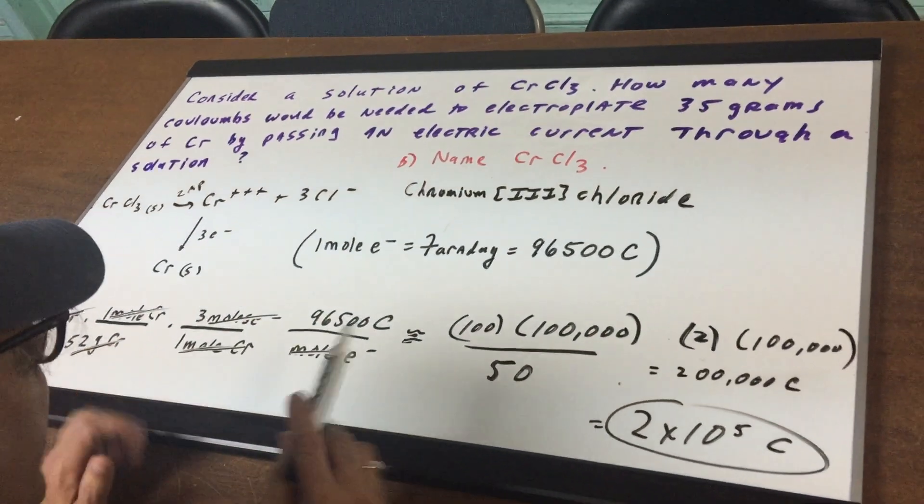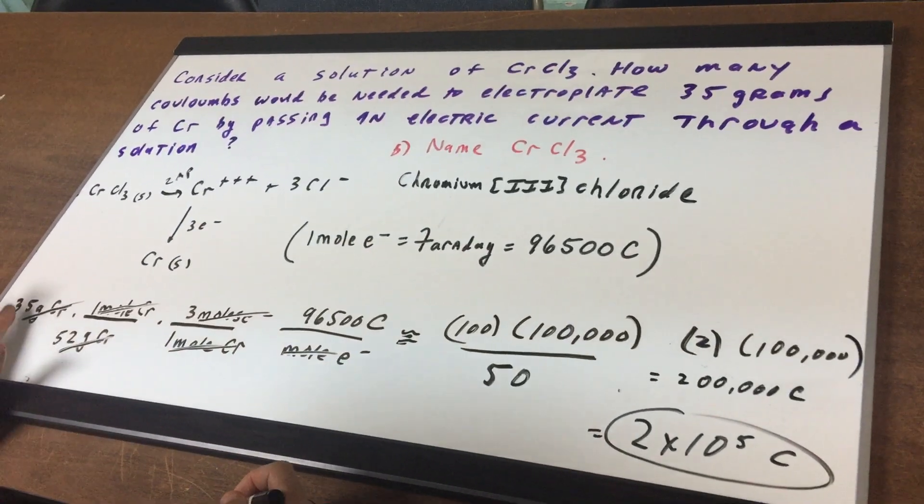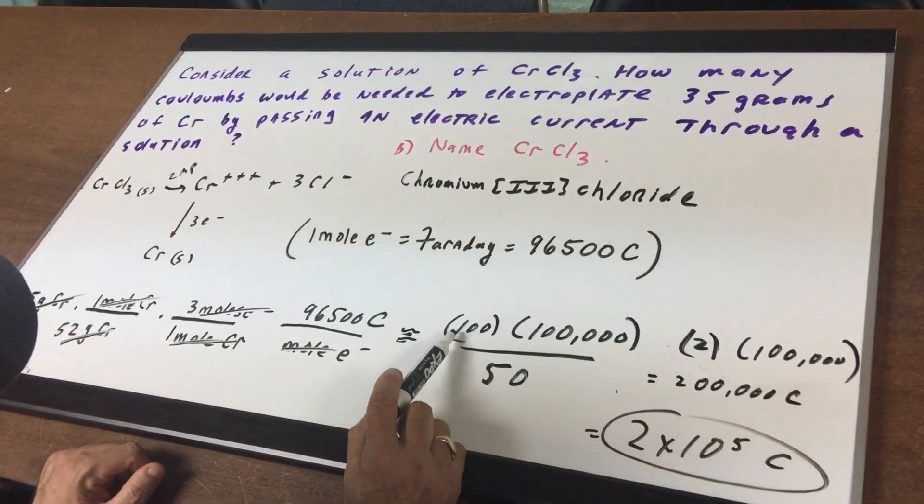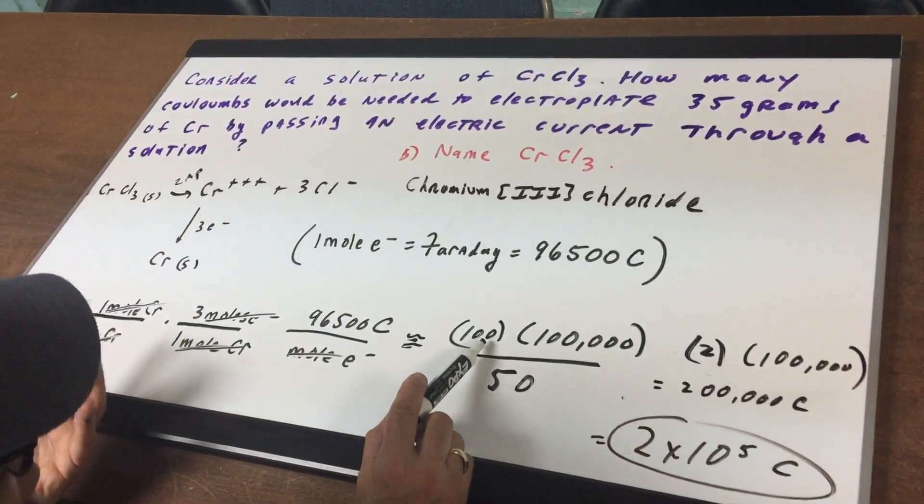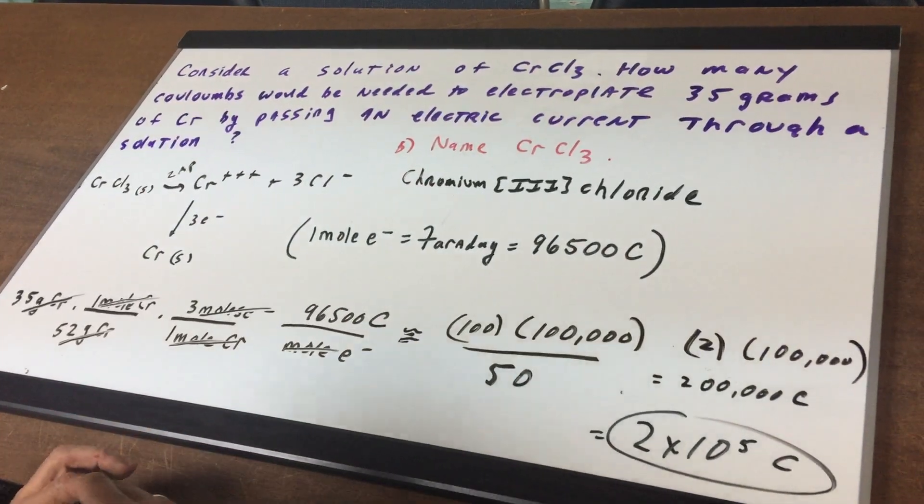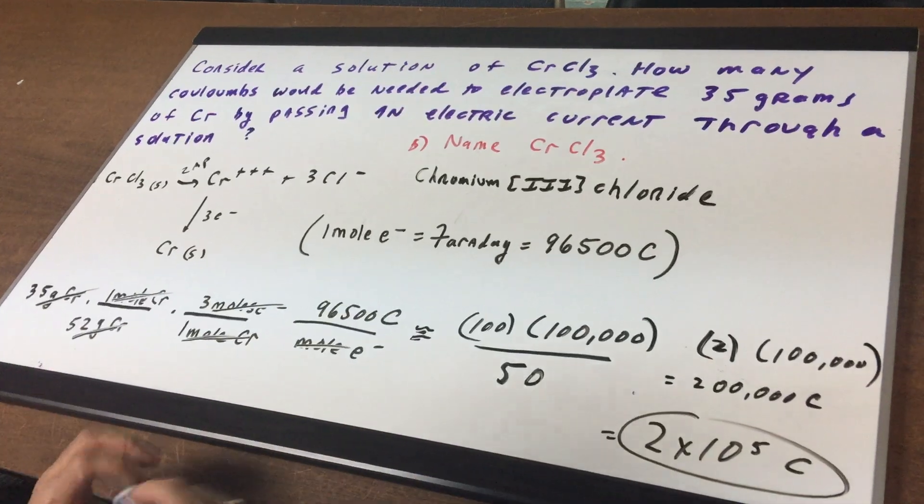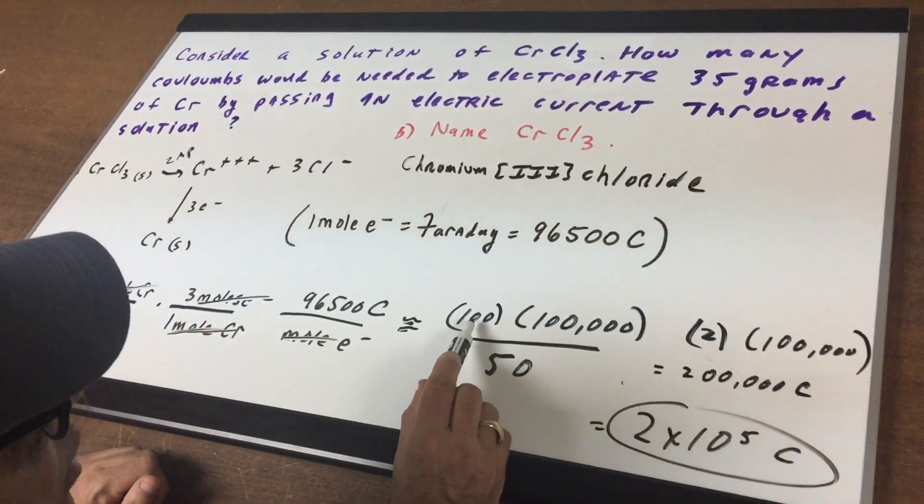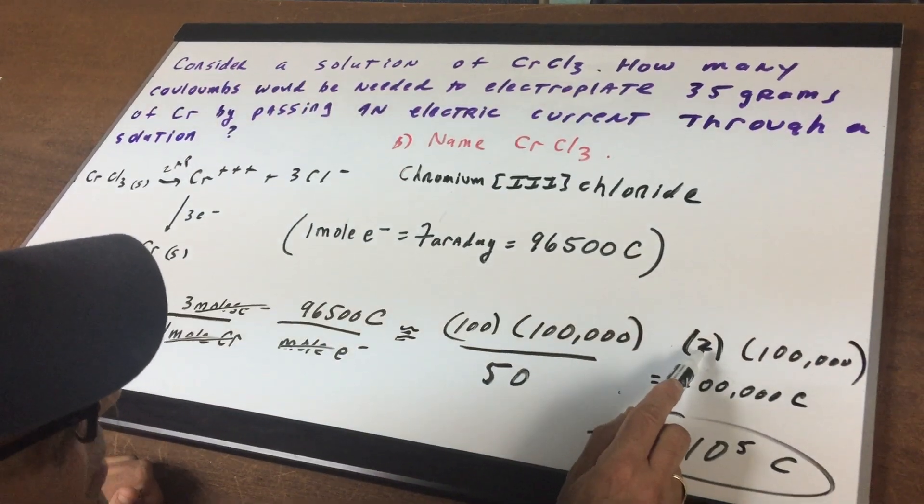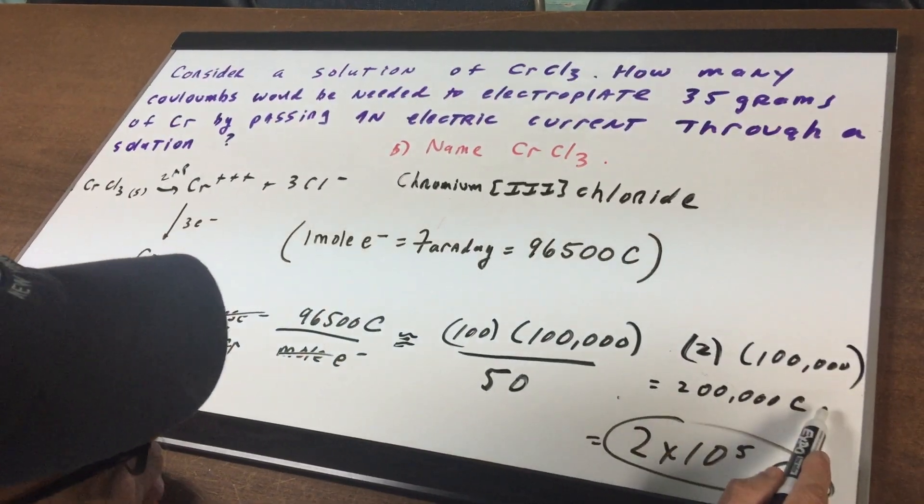Now, to hit this on the DAT at lightning speed, watch what I do. 35 times 3 is a little more than 100, so I'm going to equate this to approximately 100. 96,500, call it 100,000. 52, call it 50. So I reduce this now into something that's very easy. Now 100 over 50 is 2, so it becomes 2 times 100,000, which is 200,000.